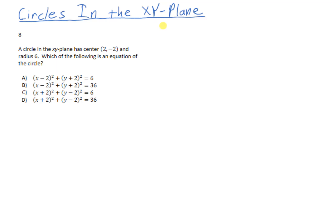Here's a pretty foundational example of a circle in the xy-plane SAT practice problem. I'm given a circle, told where the center is — the center is at (2, negative 2) — and told that the radius is length 6. Then I'm required to come up with the equation for the circle.